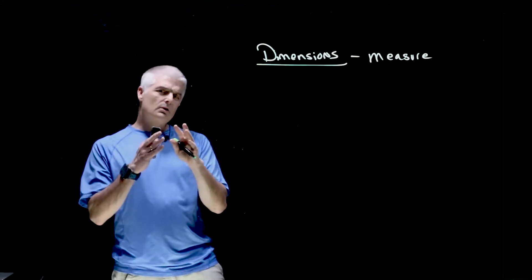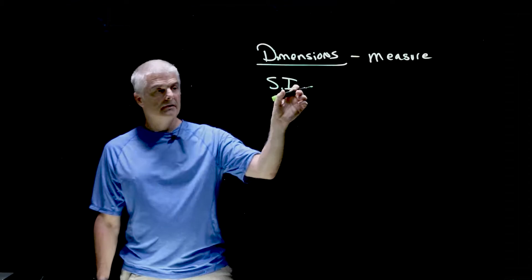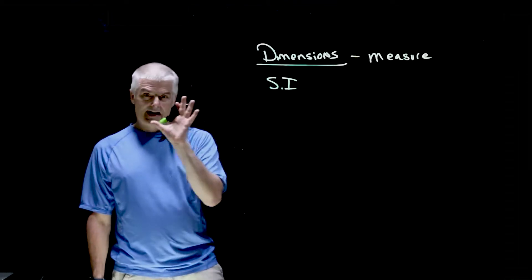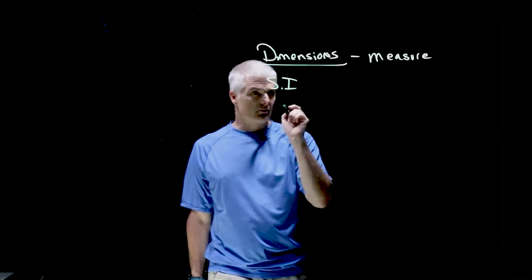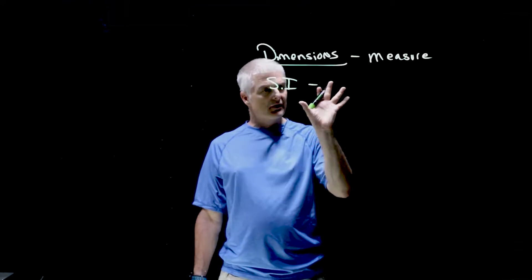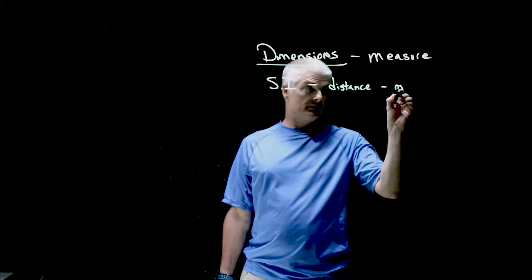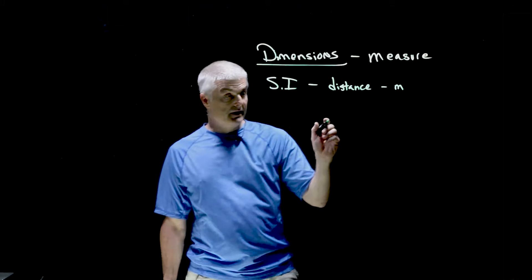But in physics, we work with something called the SI system, the System Internationale, the International System of Units. And the International System of Units has three fundamental measurements. Well, there's probably more than three, but the three key ones have to do with distance. And for distance, we use the meter, abbreviated with an M.